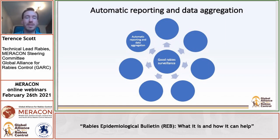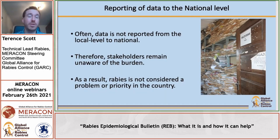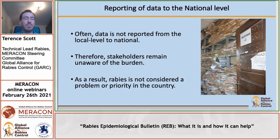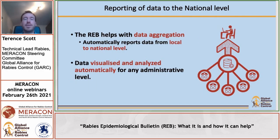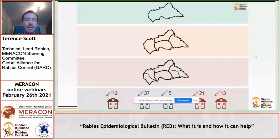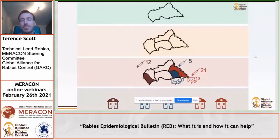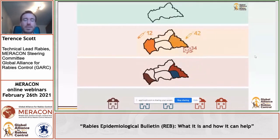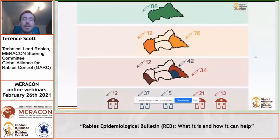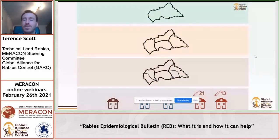Looking at reporting and data aggregation, data is often not reported from the local level to the national level due to requirements for data analysis and converting paper-based forms into something analysable. As a result, stakeholders remain unaware of the disease burden and rabies is not considered a priority. The Rabies Epidemiological Bulletin helps with data aggregation, drawing data from the local level — individual clinics — up through administrative levels such as districts and provinces, all the way to the national level, so you can see data at every single administrative level across the entire country.